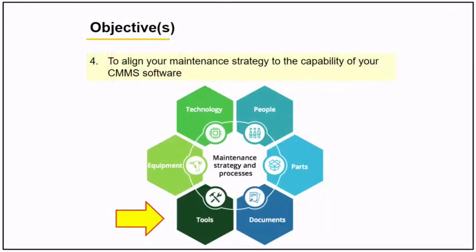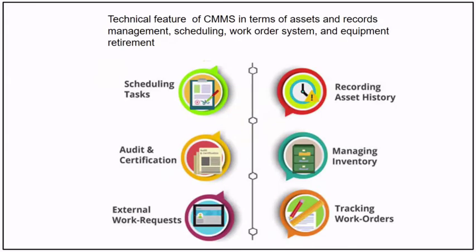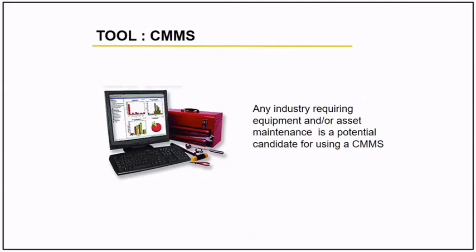We come now to the last objective of this webinar: to align your maintenance strategy to the tools to use. In handling effectively the execution of maintenance strategy, there are some basic features a computerized maintenance management software has that are very useful, like task scheduling, recording equipment history, audit and certification, managing inventory, work requests, tracking work orders, and many other things.